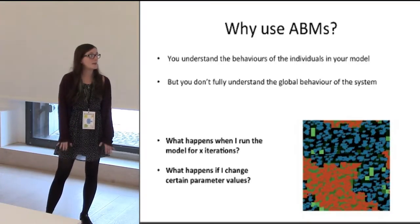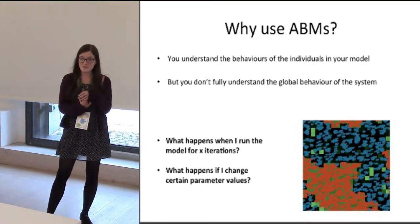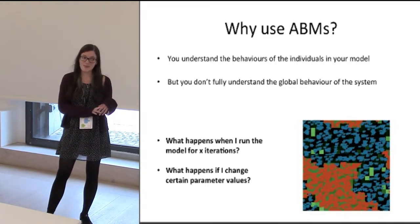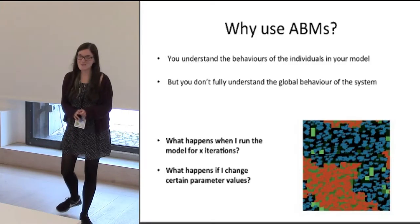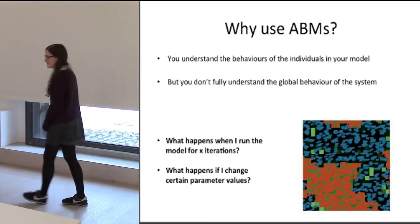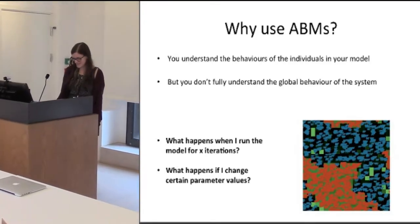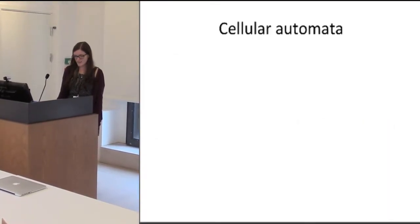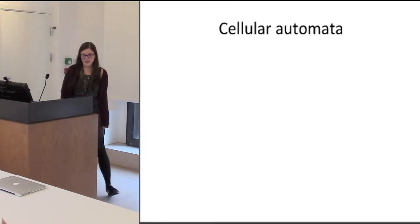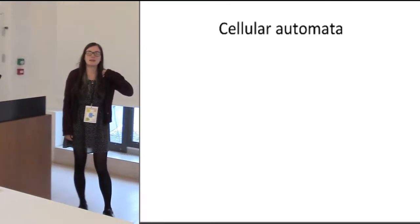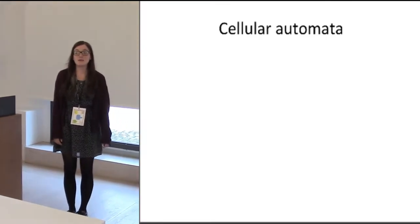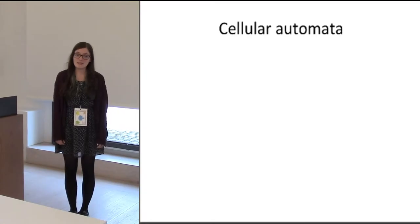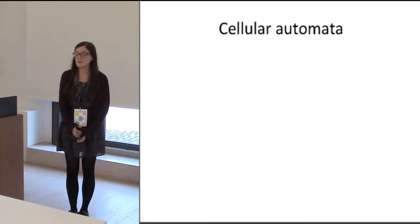I'm going to describe four other types of models and give very short examples on them. First of all, the cellular automata, which some of you have probably heard of before since they're quite similar to agent-based models.